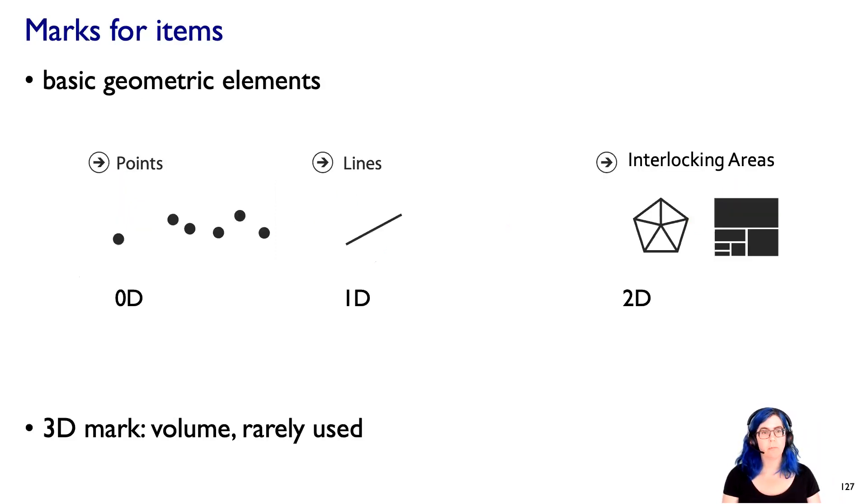When we're using marks for items, we're thinking about these as some basic elements. These are the geometry - it's like points or lines or interlocking areas. It is possible to also think about 3D marks; that's usually used with spatial data in particular. We're not going to think as much about visual channels for that at the moment, but we're going to come back to that when we get to spatial data.